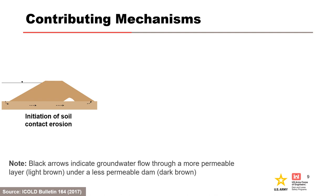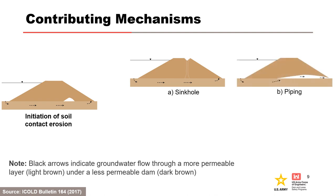Several examples of how soil contact erosion acts as a contributing mechanism are shown in the figures on this slide. In Figure A, soil contact erosion causes a cavity to develop within the embankment fill. When the pressures around the cavity drop, a roof collapse occurs. In Figure B, a cavity created by soil contact erosion does not collapse and can be an initiator for backward erosion piping. In this particular configuration, the backward erosion piping may not ever be observed.